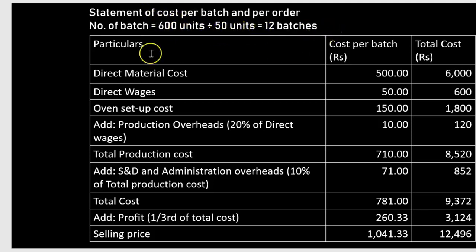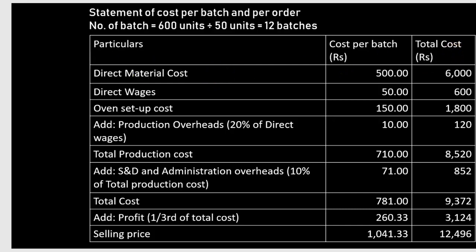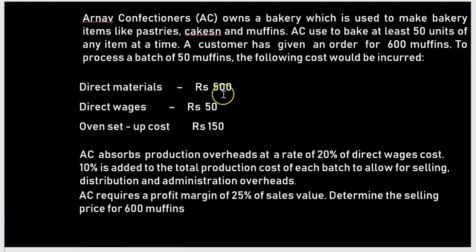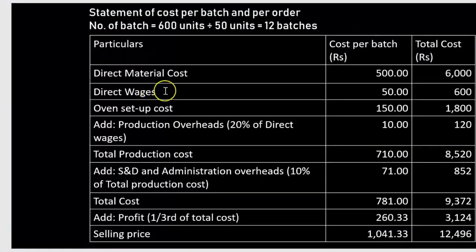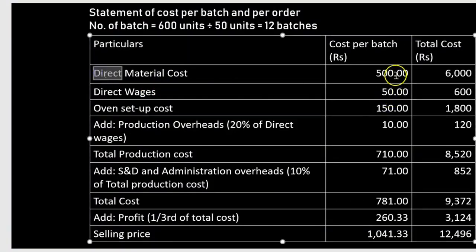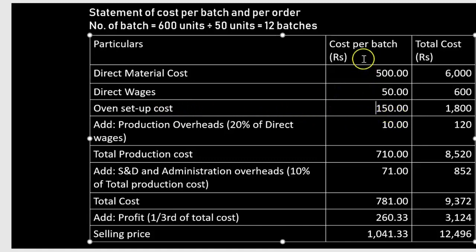Total units required is 600 divided by 50 units per batch, giving us 12 batches. We'll set up a table with columns for particulars, cost per batch, and total cost. Direct material cost is rupees 500, wages rupees 50, and oven setup cost rupees 150. These are all costs for one batch.